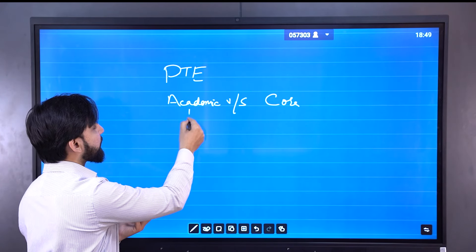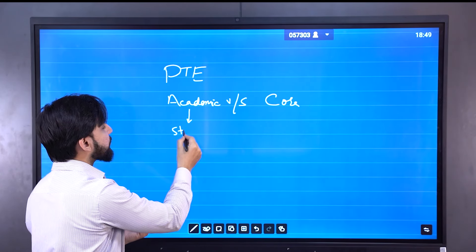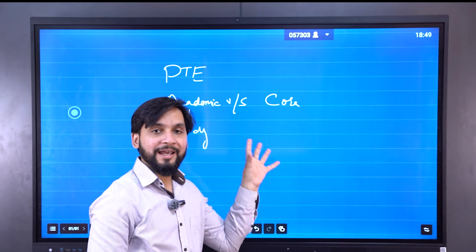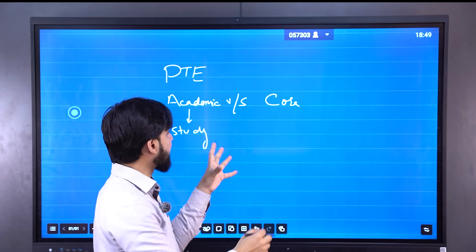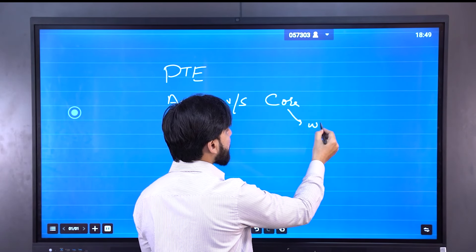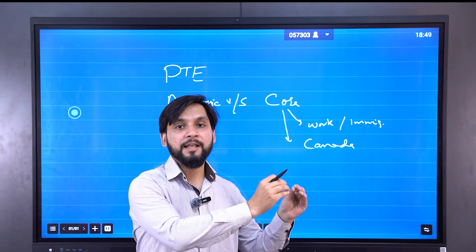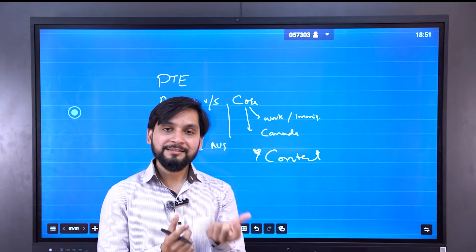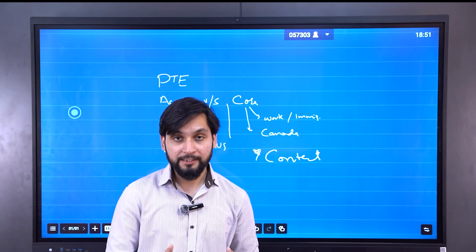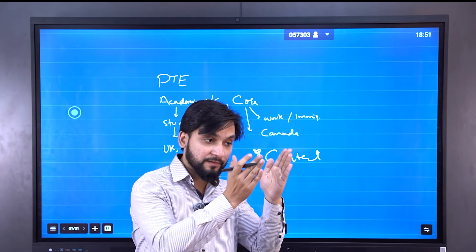PTE Academic is for those who are going to study. PTE Core will specifically cater to work or immigration. The test will assess general English instead of just academic English.